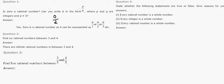If any term can be written in the form p by q, and q must not be equal to 0, then q may be any value like 5. So 0 can be written as 0 by 5, and hence 0 is a rational number.